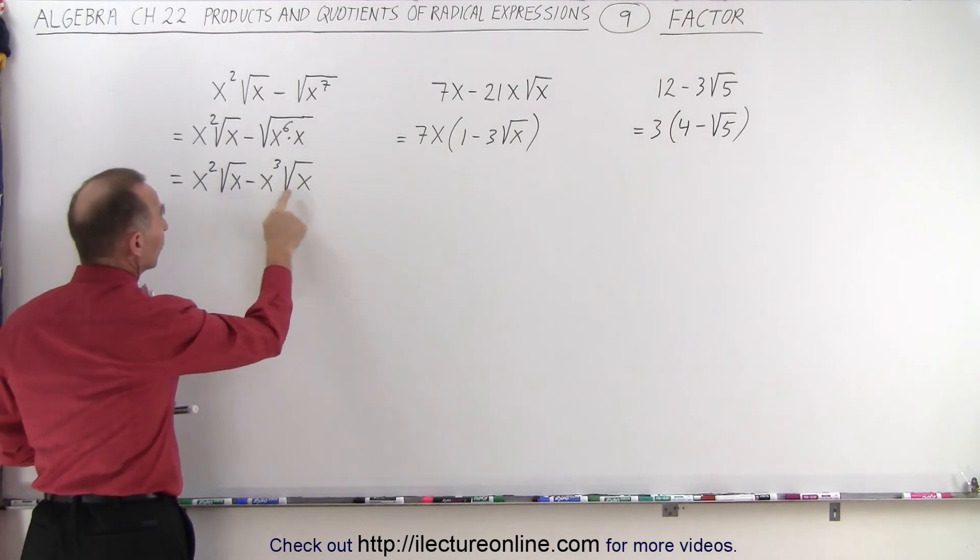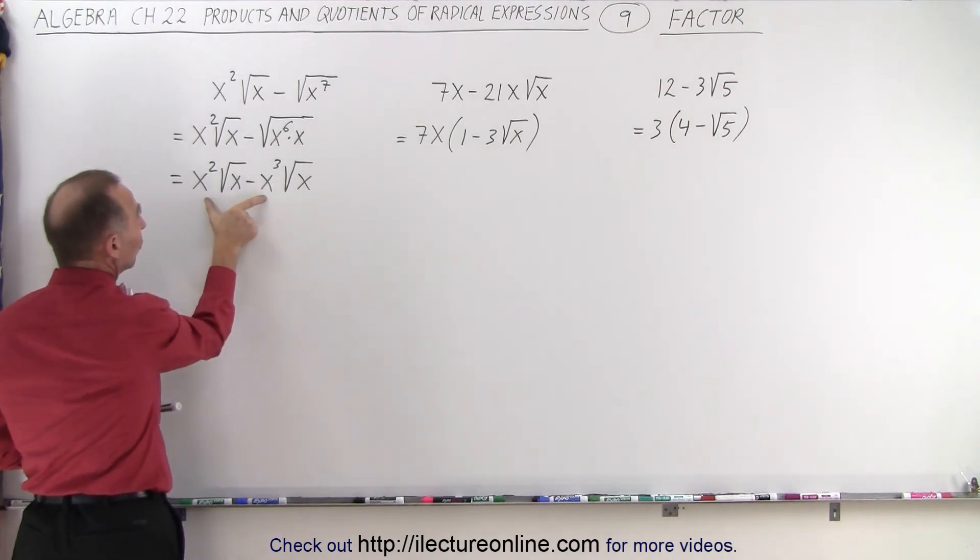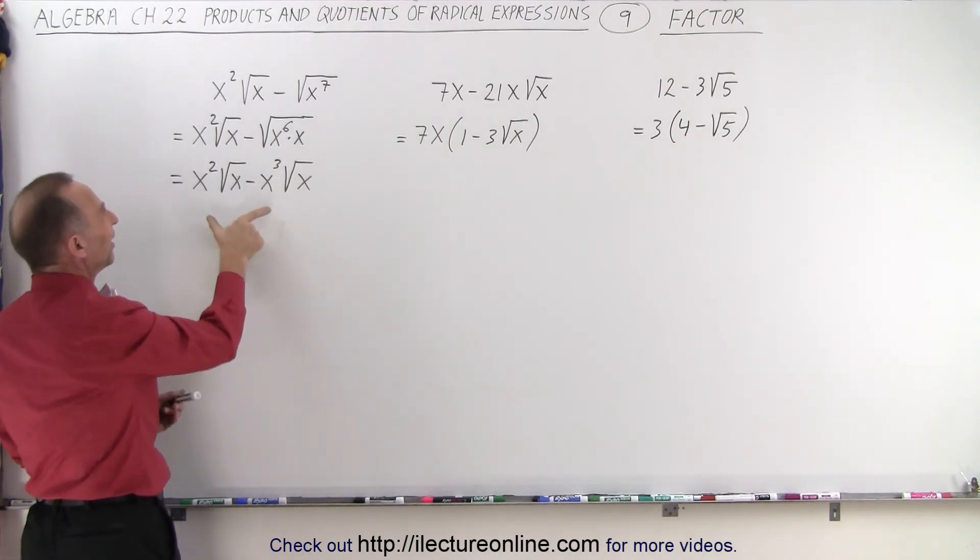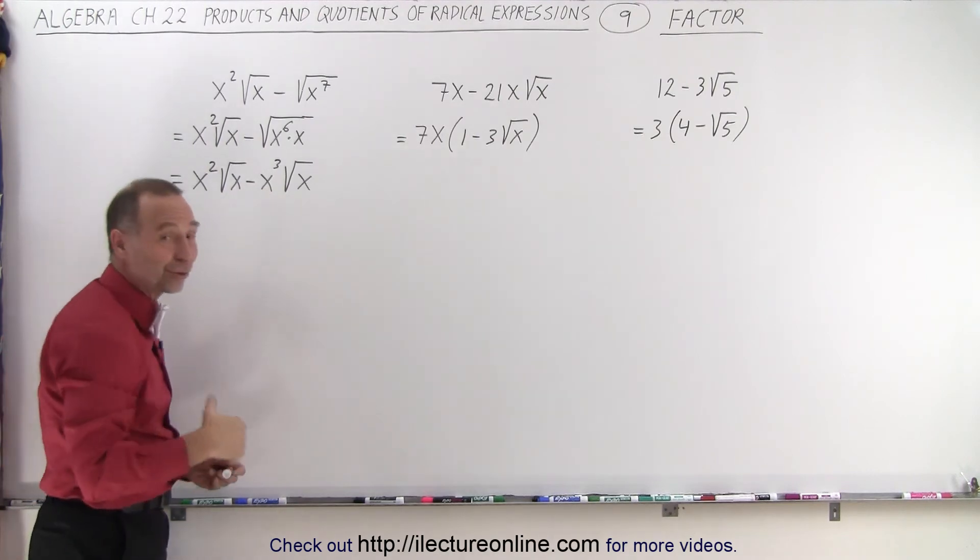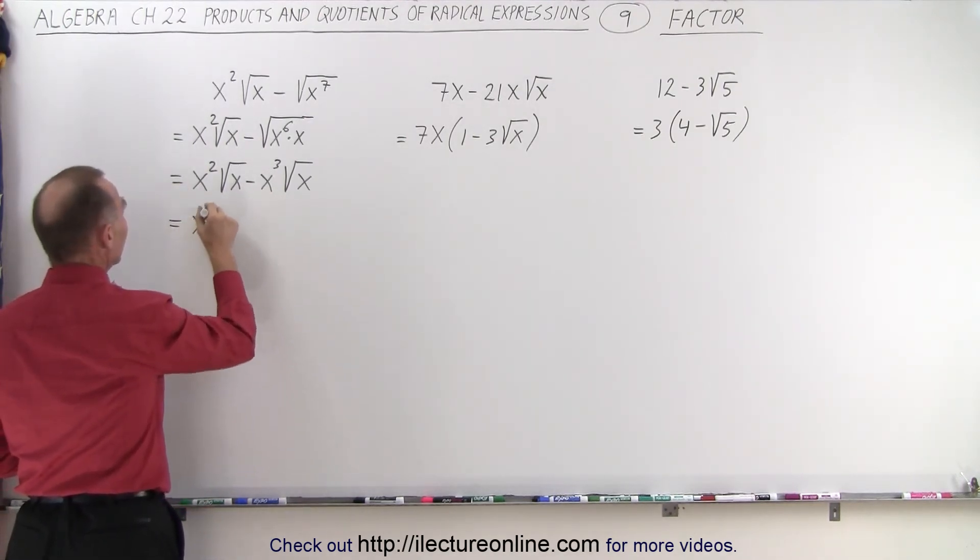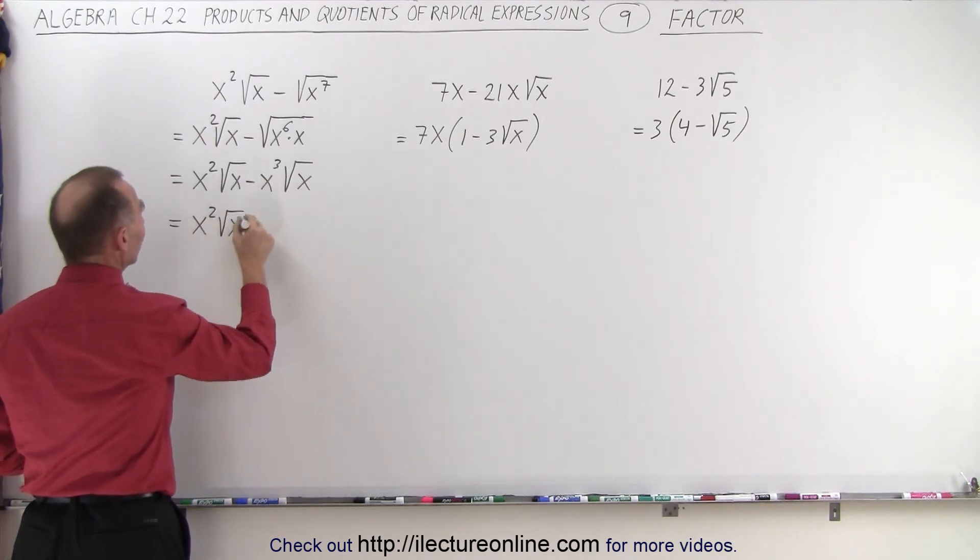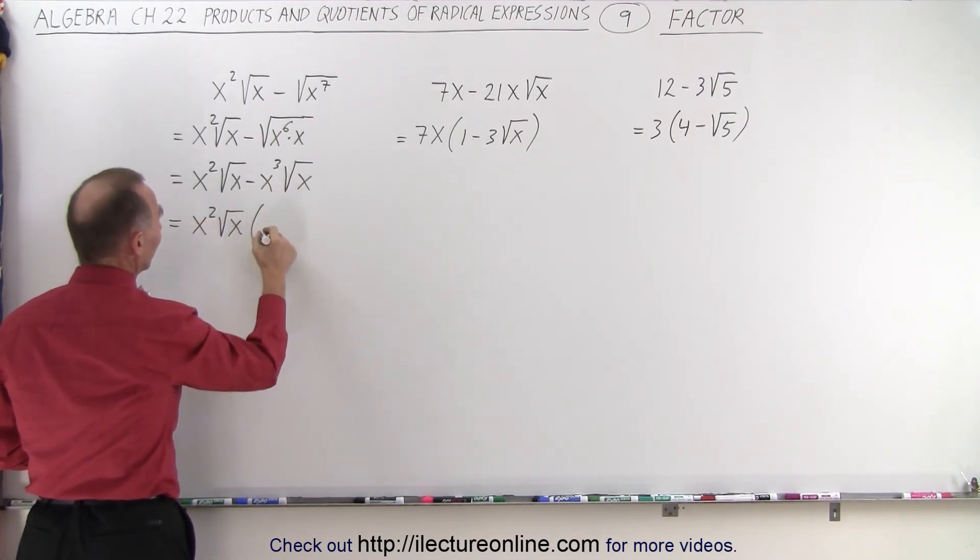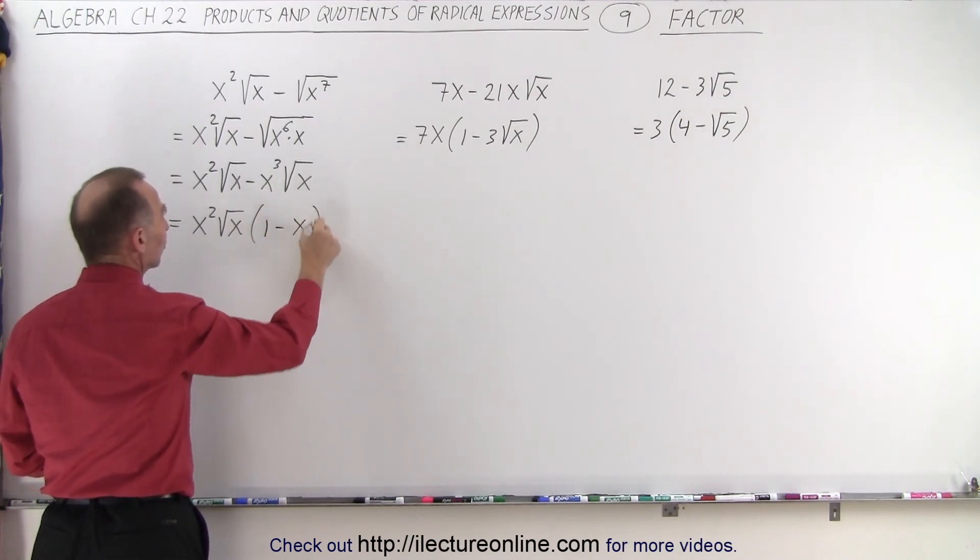We can factor the square root of x out of each term, but we can also factor out x squared. Wow, those are quite some tongue twisters. But anyway, here we go. So we take x squared times the square root of x, and let's see what we have left. In this case, it will be 1 minus here, we're left with an x.